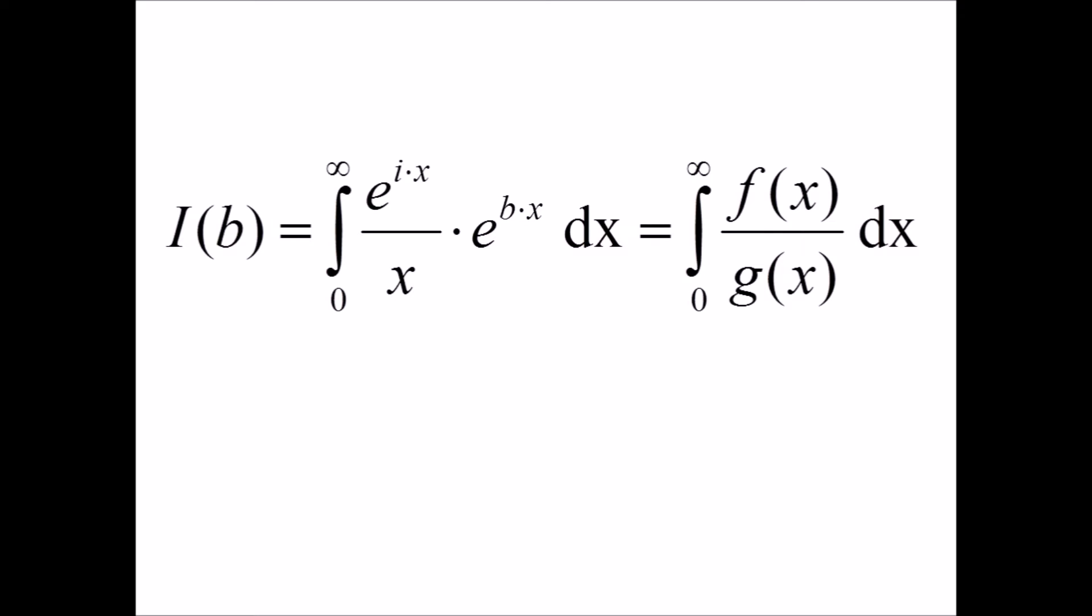Let's look at a more general integral so that we can understand the original one better. If we look at this one, we see that it can be written as a fraction, with the numerator being exponential and the denominator being x. We already have a formula for f of x of b, so if we look at the corresponding fractions, then we see that g of x must equal x, and the constant function must equal i times x.